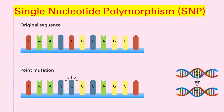SNPs, or single nucleotide polymorphisms, refer to locations within the human genome where the type of nucleotide present — A, T, G, or C — can differ between individuals. SNPs are the most common type of genetic variation found among people. Although most SNPs have no effect on health, they can be important tools for genetic research. For example, SNPs are the basis for genome-wide association studies that allow researchers to determine regions of the genome that may be important in disease development.